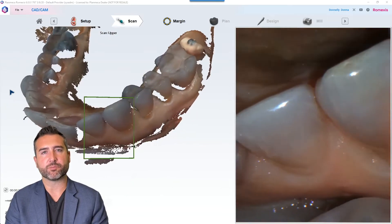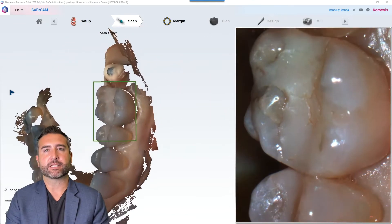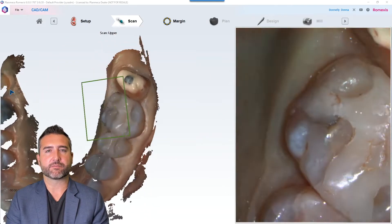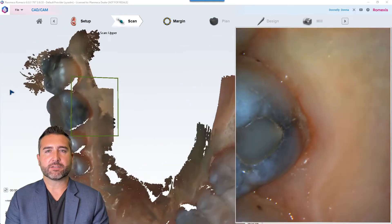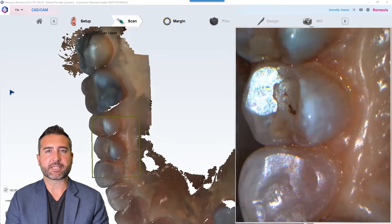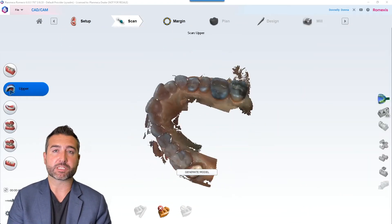Starting on the lingual, then occlusal, and then a slight roll buccal and then a hard roll buccal to fill in all that data and get that cross arch accuracy that we're known for. And then lastly you could fill in, the last step is to fill in any holes that you might have in the model that you think would be critical to the success of the bridge.